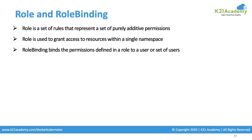So we have role and role binding. The role defines a set of rules — additive permissions which can be granted to the user belonging to that role. As soon as a user belongs to this role, they will get access to whatever is being granted inside that role.